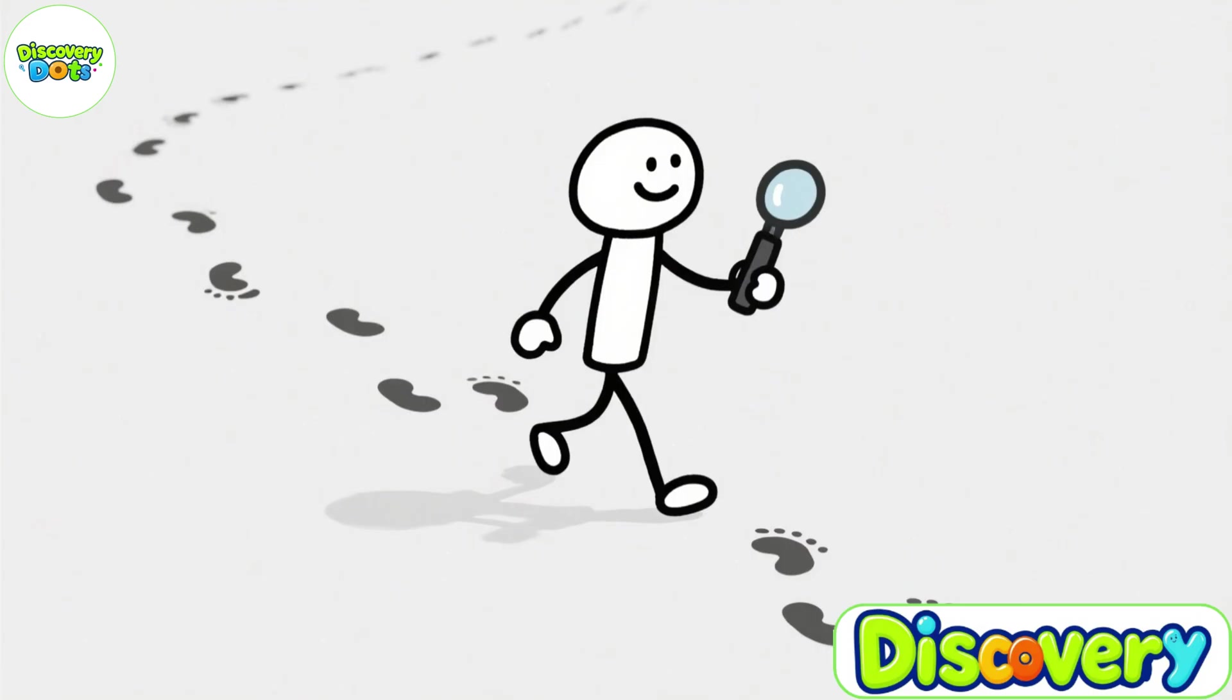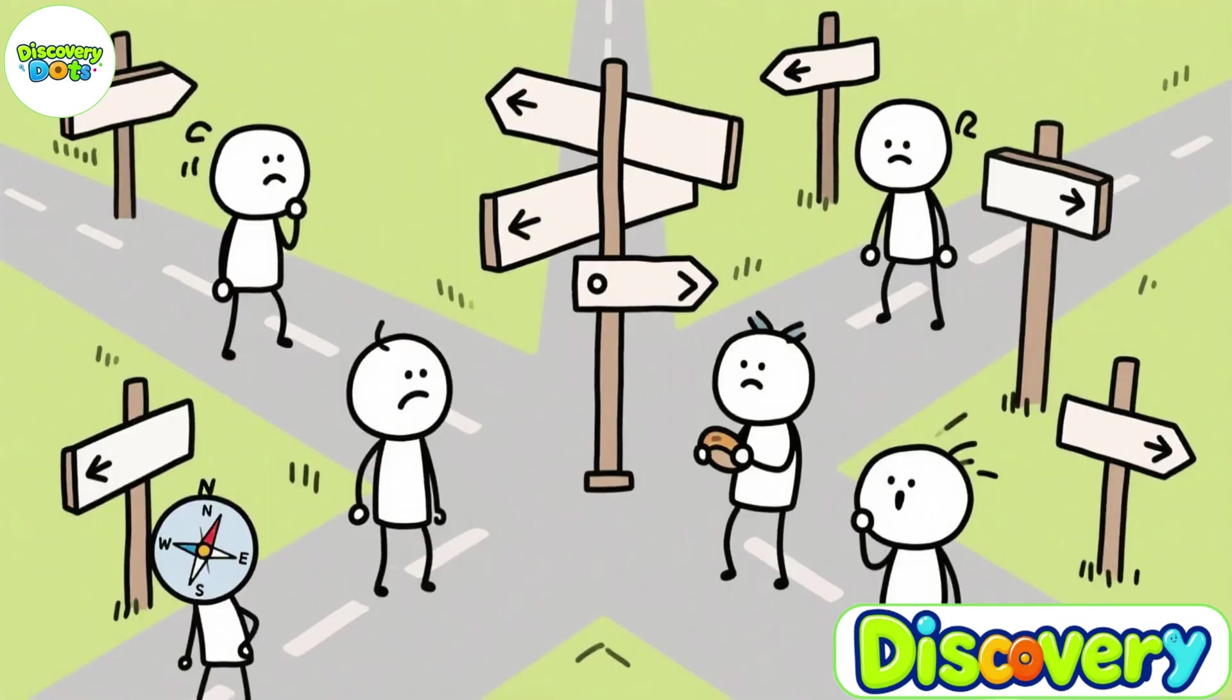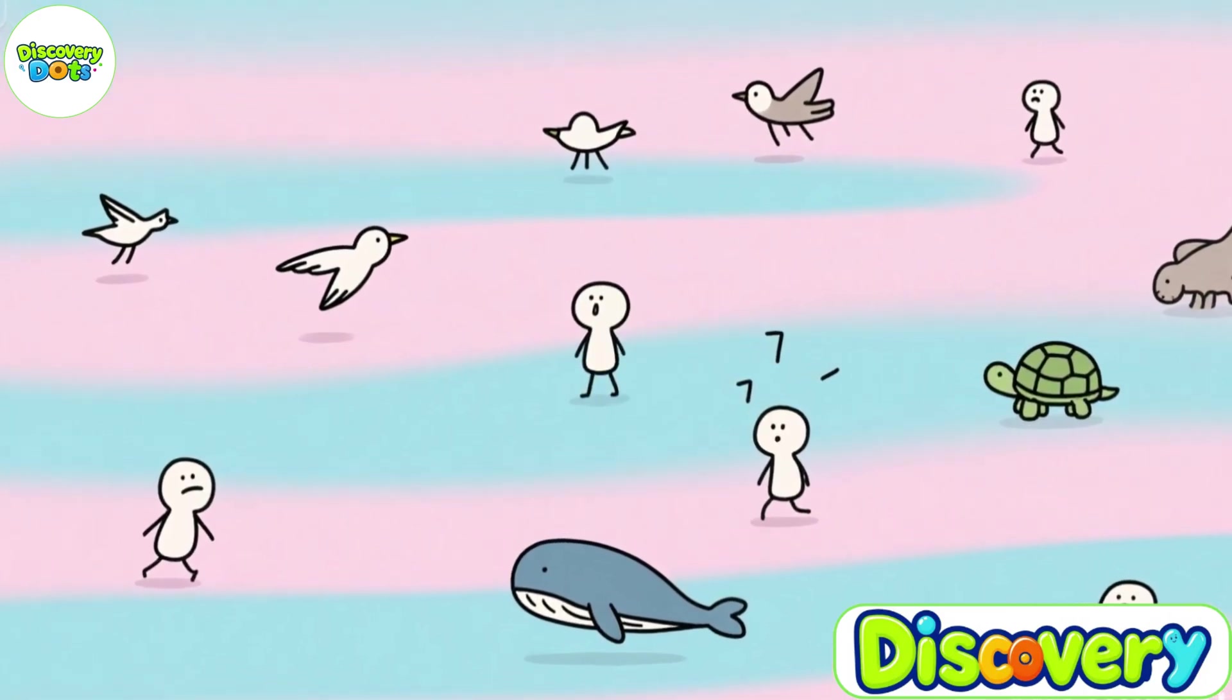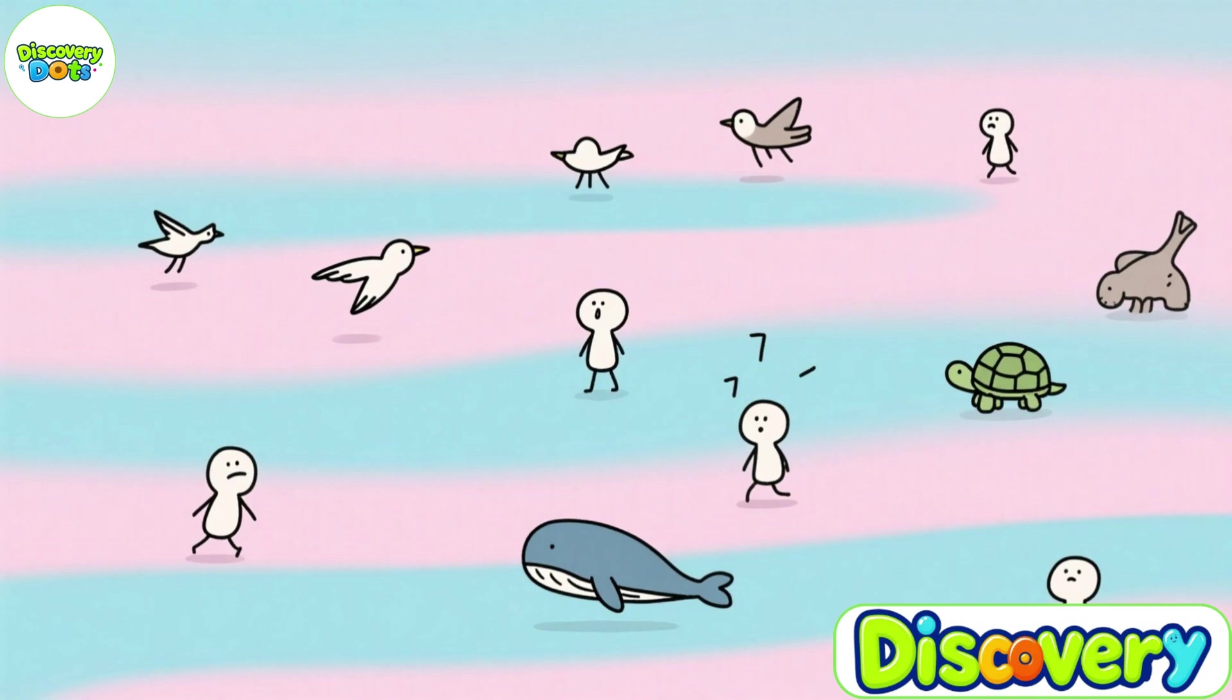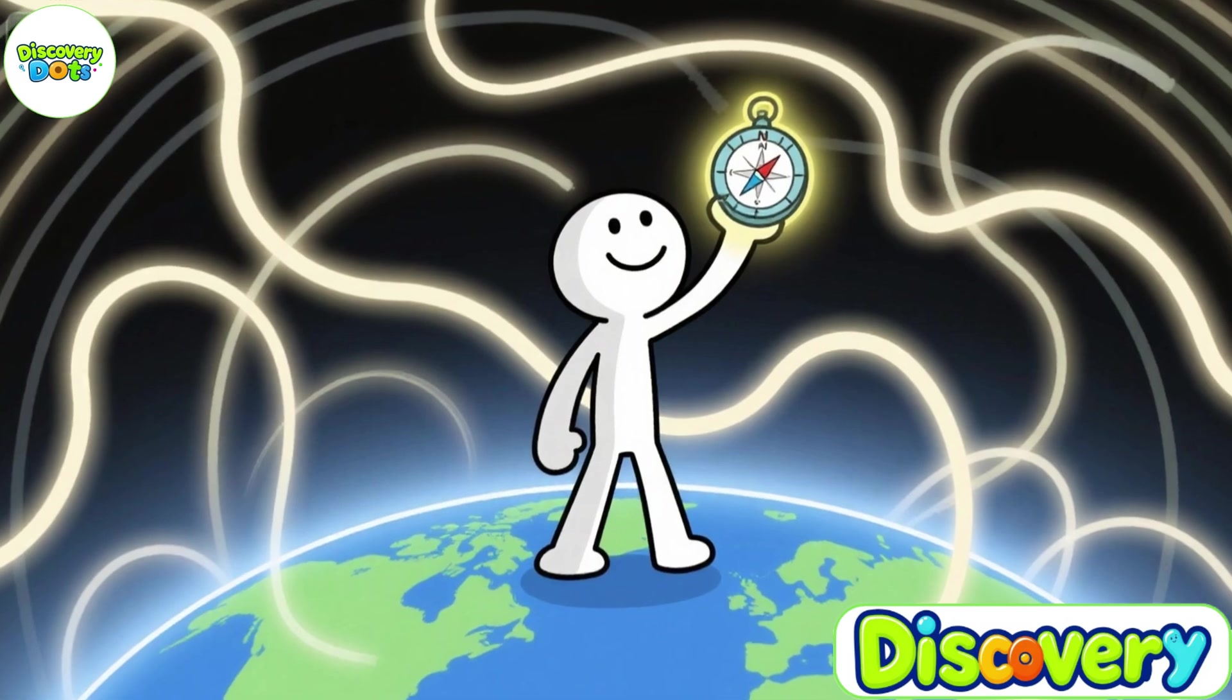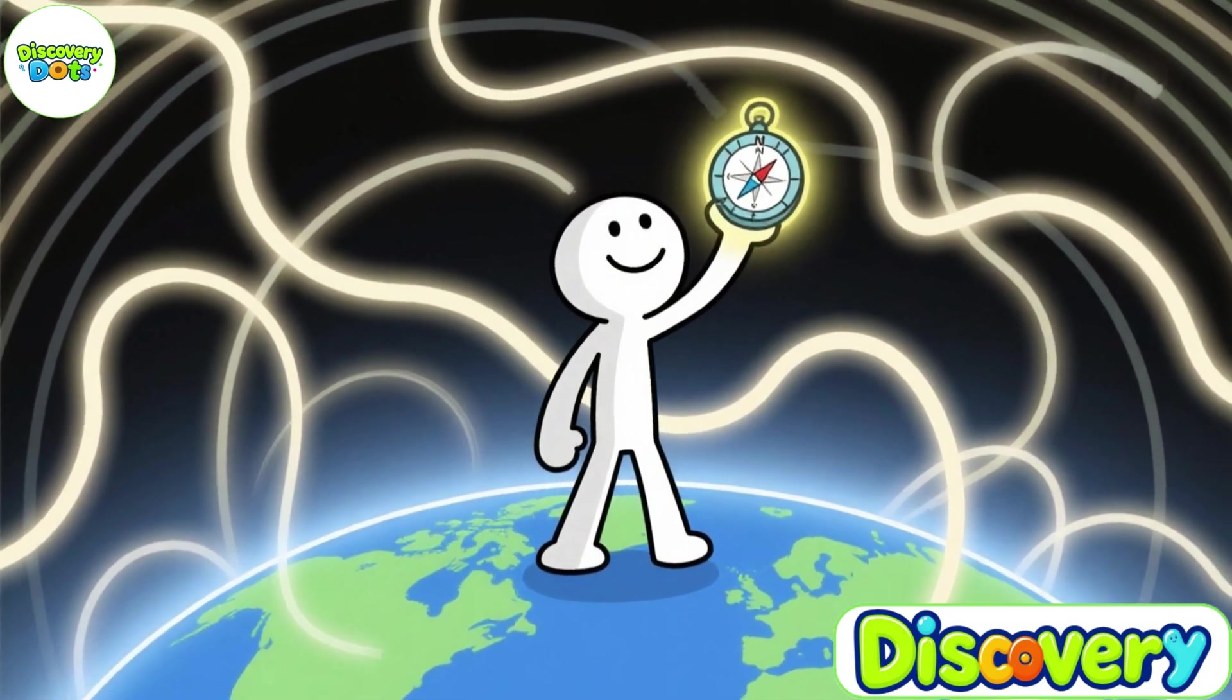But the journey of discovery does not end here. Imagine this: if one day, Earth's magnetic field were to disappear completely, the compass needle would no longer point north. How would humans find their way? What would happen to migratory birds and animals that navigate using Earth's magnetic field? This is one of the many hypothetical scenarios that science continues to study. And it reminds us that the things we take for granted, like the tiny needle of a compass, may actually hold within them one of nature's greatest secrets.